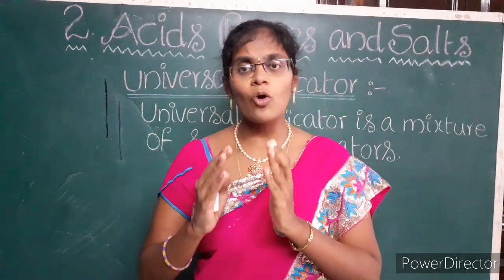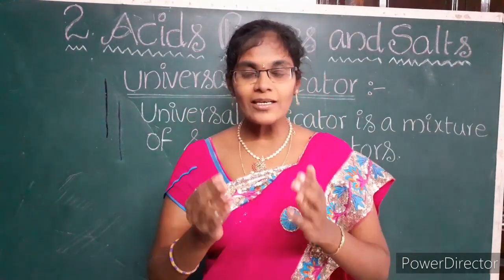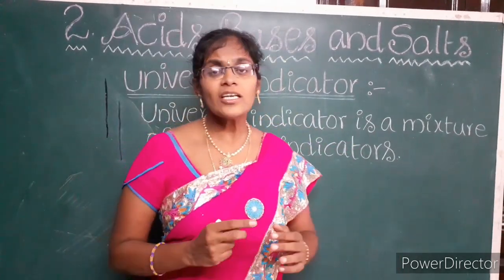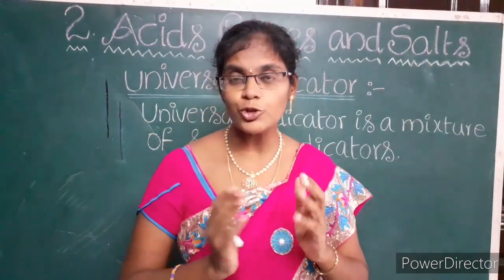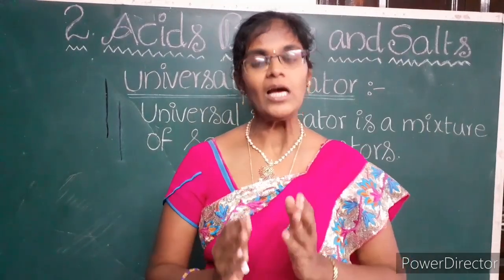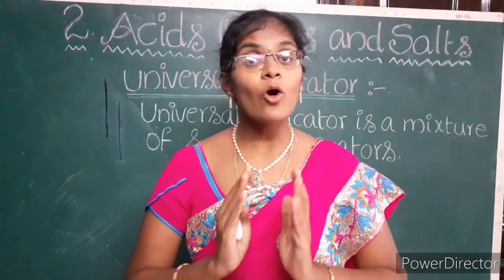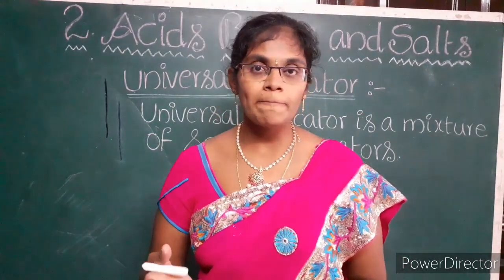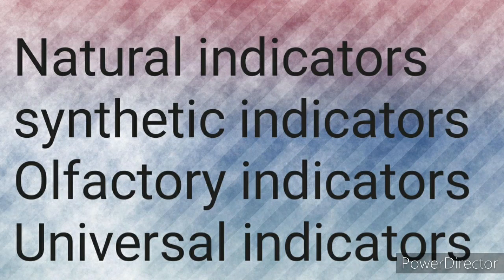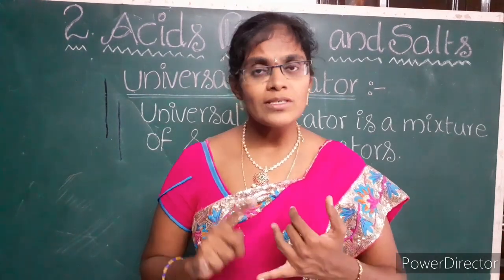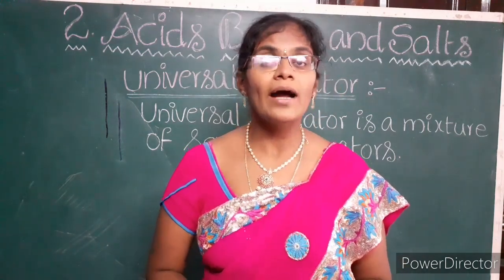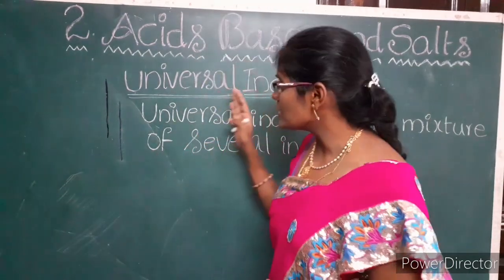This information we already discussed in our previous video. Now let us move on to the next topic: universal indicators. In acids, bases and salts part 2, I already explained indicators. There are 4 types of indicators: natural indicators, synthetic indicators, olfactory indicators, and universal indicators. In that video, I explained natural, synthetic, and olfactory indicators. In this video, we are going to discuss universal indicators.